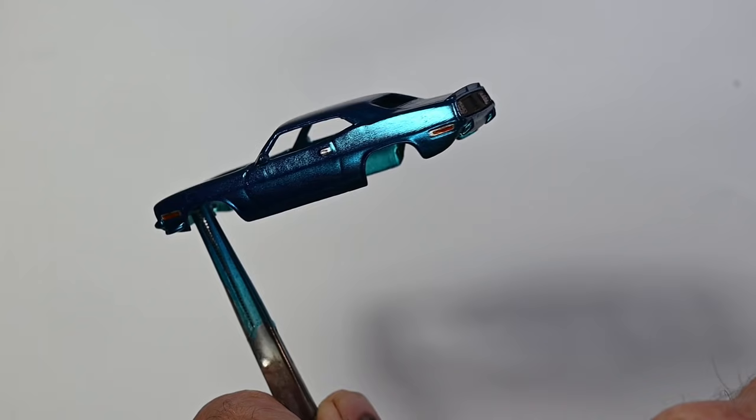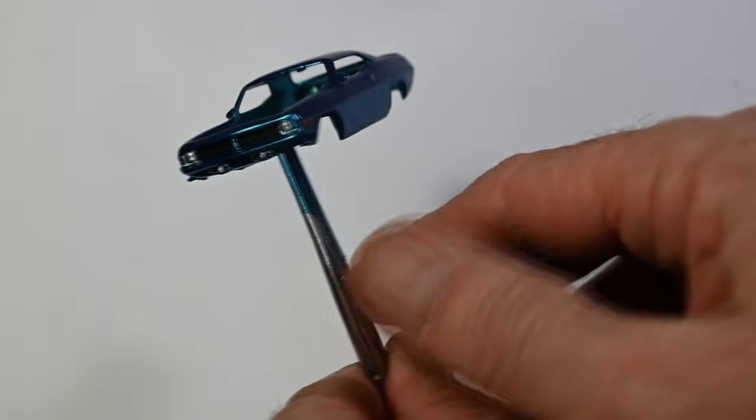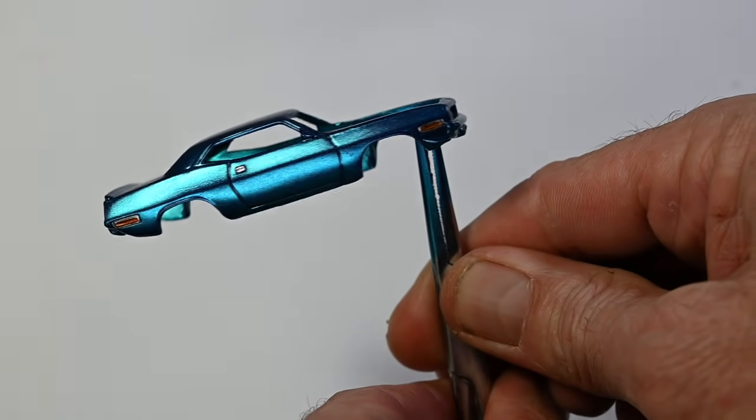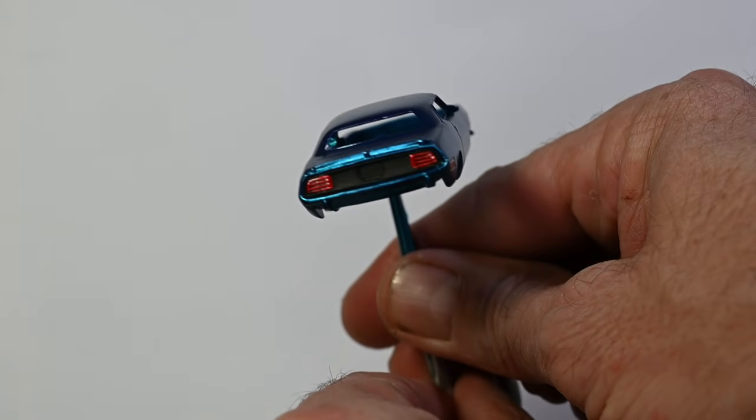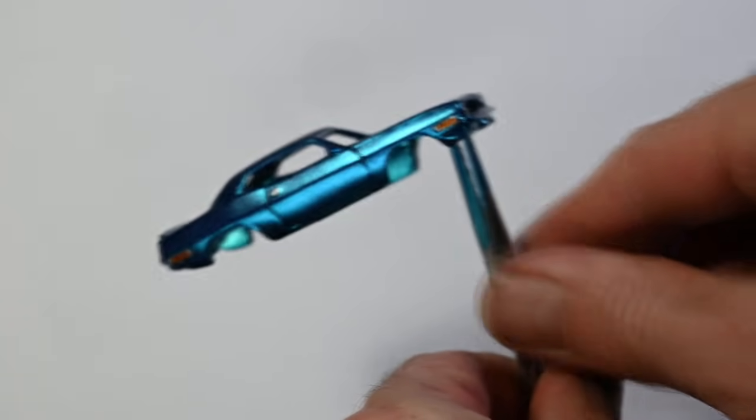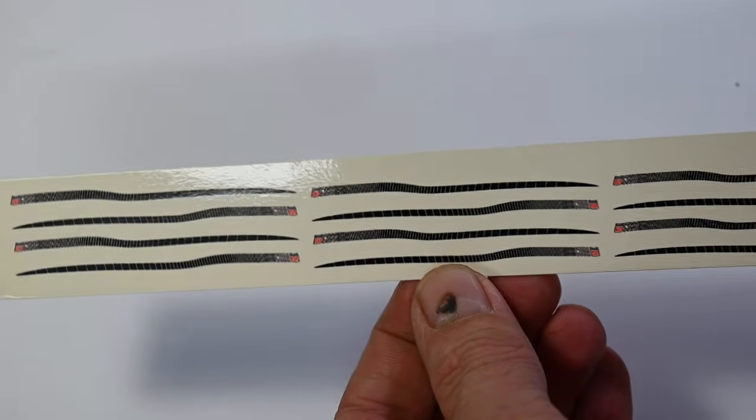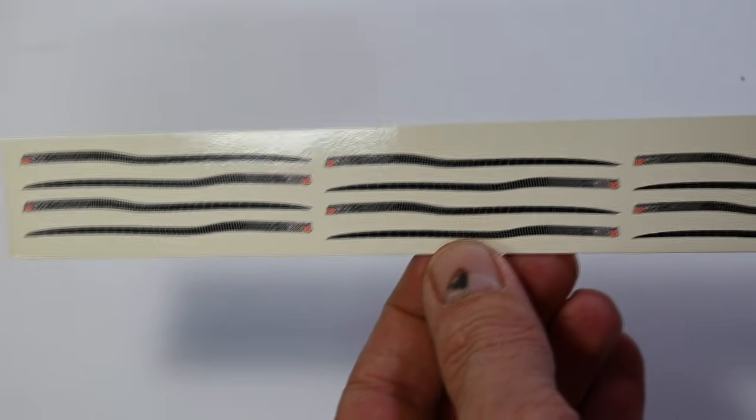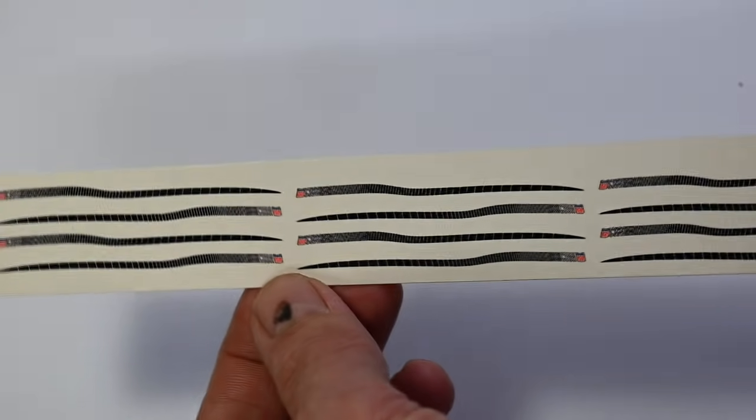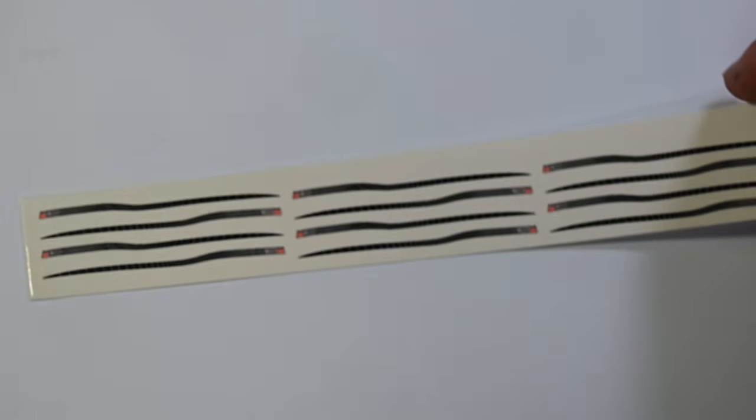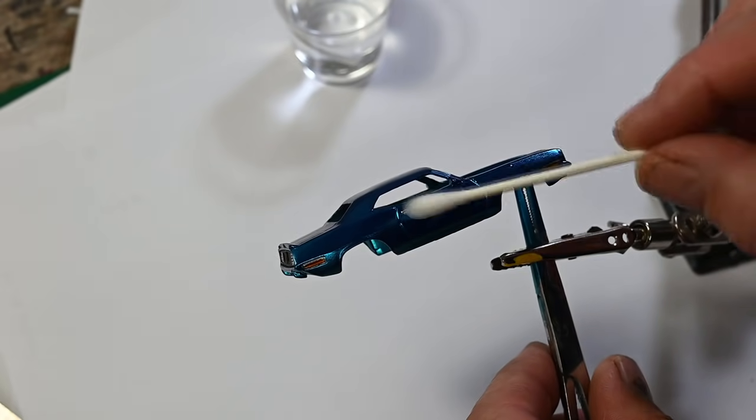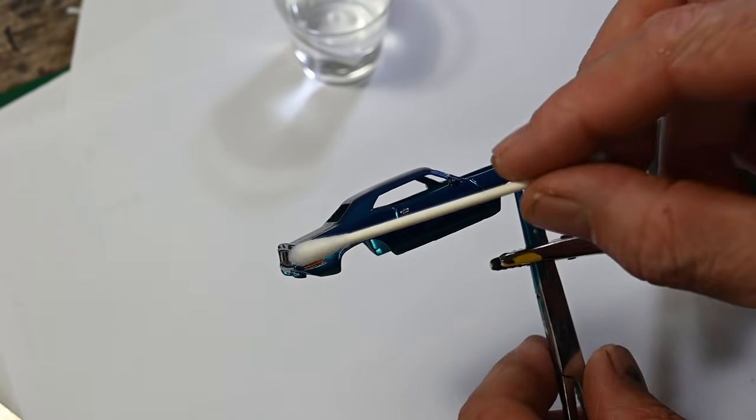Next, I detailed in the lights and the grill and the door handles. Then on Photoshop, I've made some Cuda Strike decals and printed them out. So I'll cut a couple of these out and then apply them to the sides of the car.